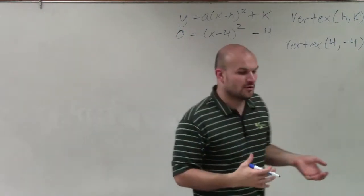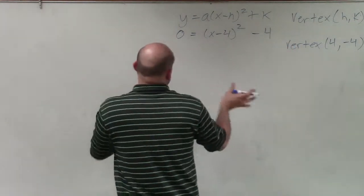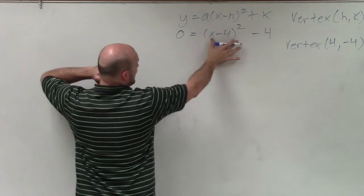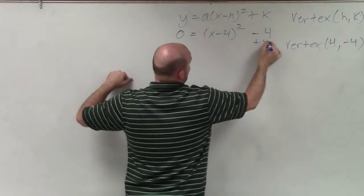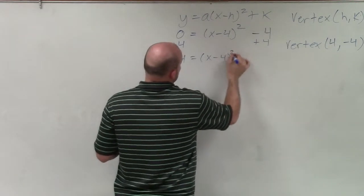Since this is in vertex form, I can solve using the square root method and inverse operations. So to do that, I need to isolate my x minus 4 squared. So I'll add a 4 to both sides. So I have 4 equals x minus 4 squared.